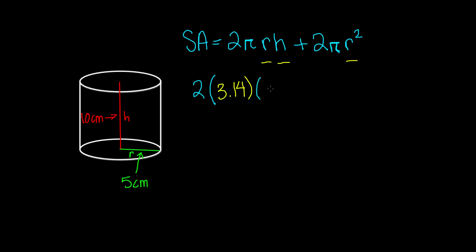Times radius, which is 5. Times height, which is 10. Plus 2 times pi. The approximate number for pi is 3.14.